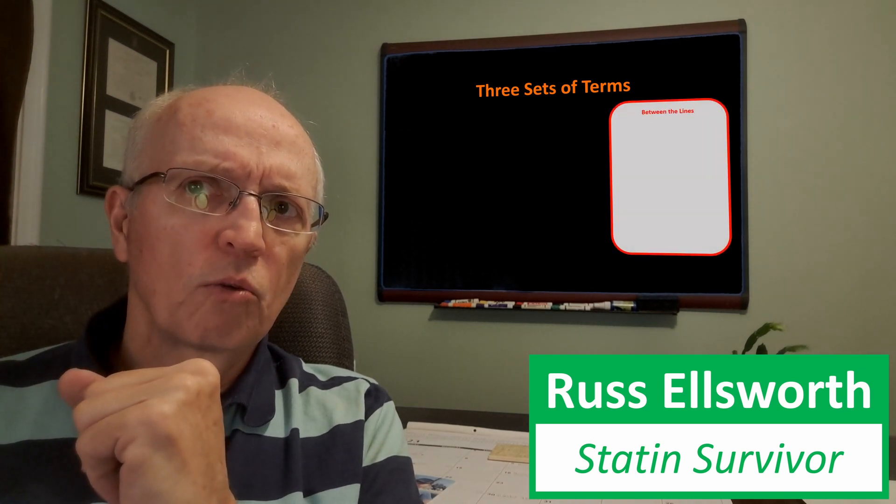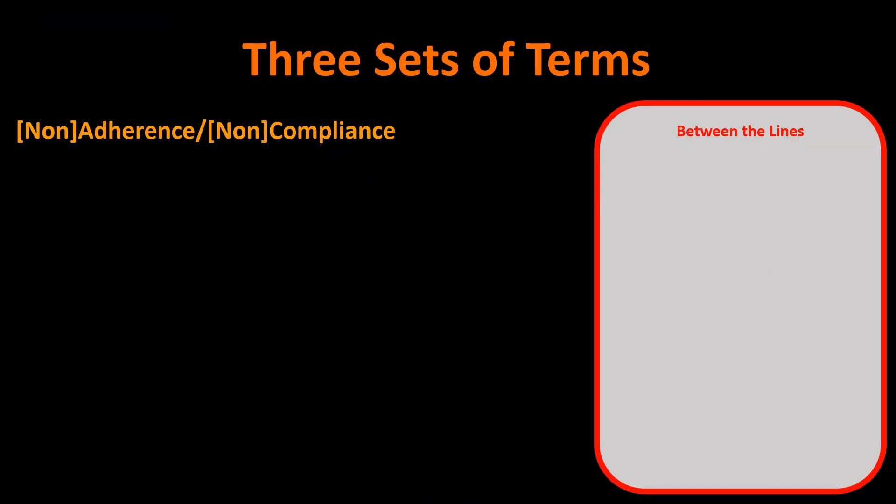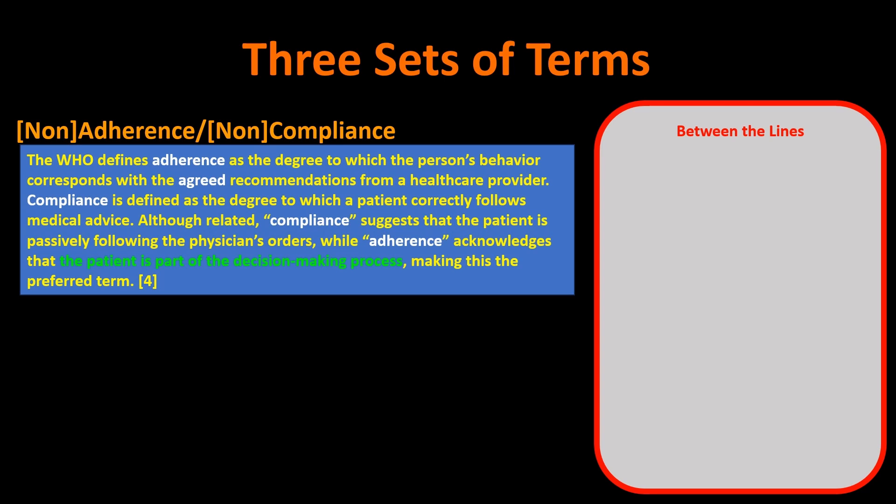The first set of terms are what I call the adherence and compliance terms. The World Health Organization defines adherence as the degree to which a person's behavior corresponds with the agreed recommendations from a healthcare provider. Compliance is defined as the degree to which a patient correctly follows medical advice. Compliance suggests the patient is passively following the physician's orders, while adherence acknowledges that the patient is part of the decision-making process, making adherence the preferred term.